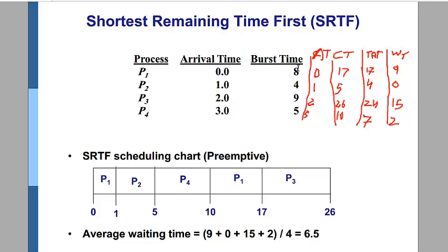Then we check again for shortest remaining time. P3 has 9 and P1 has 8, but P1 has already run for one burst time so it has 7 remaining. P1 will run from 10 to 17. The last process is P3, which will run from 17 to 26 because its burst time is 9.